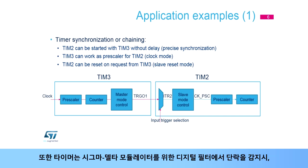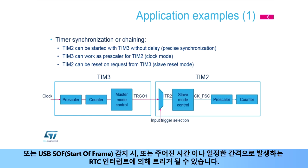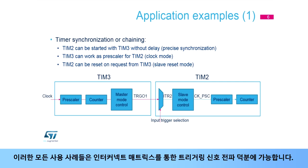Timers can also be triggered by a short-circuit detection on a digital filter for sigma-delta modulators, when a USB start of frame is detected, or by a real-time clock interrupt at a given time or at a regular interval. All these use cases are enabled thanks to the propagation of triggering signals through the interconnect matrix.